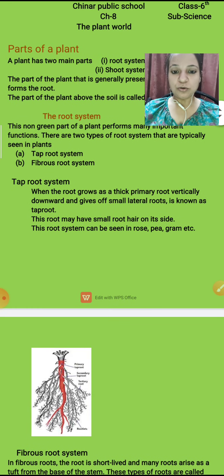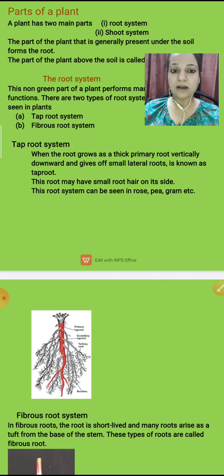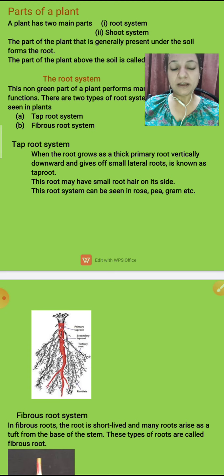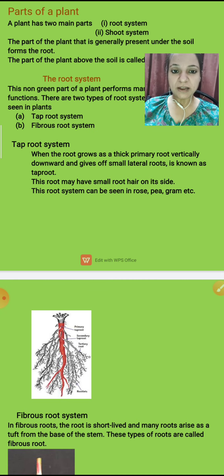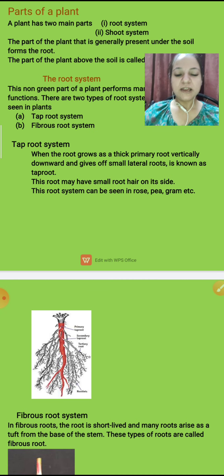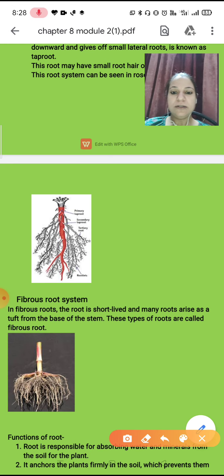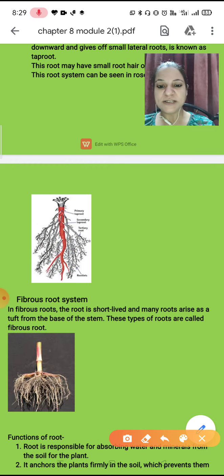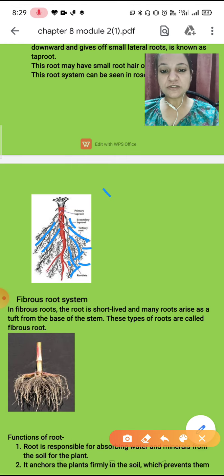Tap roots are basically roots which you can see in this diagram also. In tap root, a primary root grows vertically — jis se haem primary root bolte, vertically grow karta hai — and gives rise to many lateral roots, which is known as tap root. Pahle ek single bari vertically root develop hoti hai, jis ke side se bahut sari lateral roots develop hoti hai. In se chhote chhote hairs grow karte hai, that is called rootlets. Here you can see in this diagram: this red one, the bigger one, is the primary root, and from its sides you can see small roots and root hairs arising.